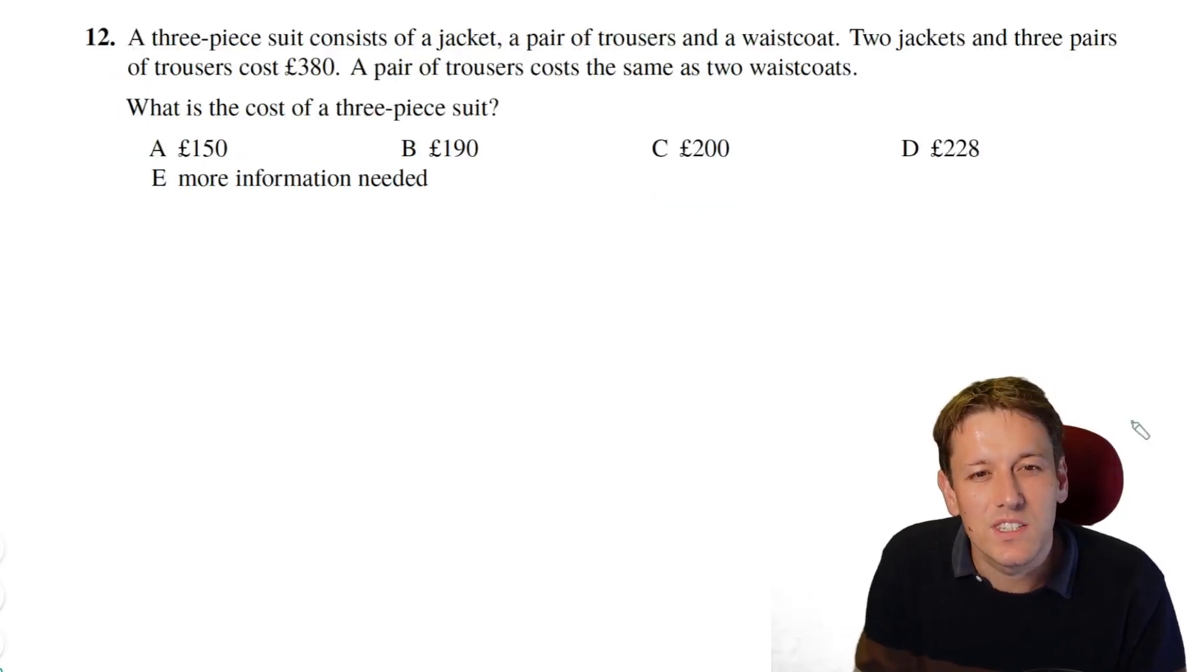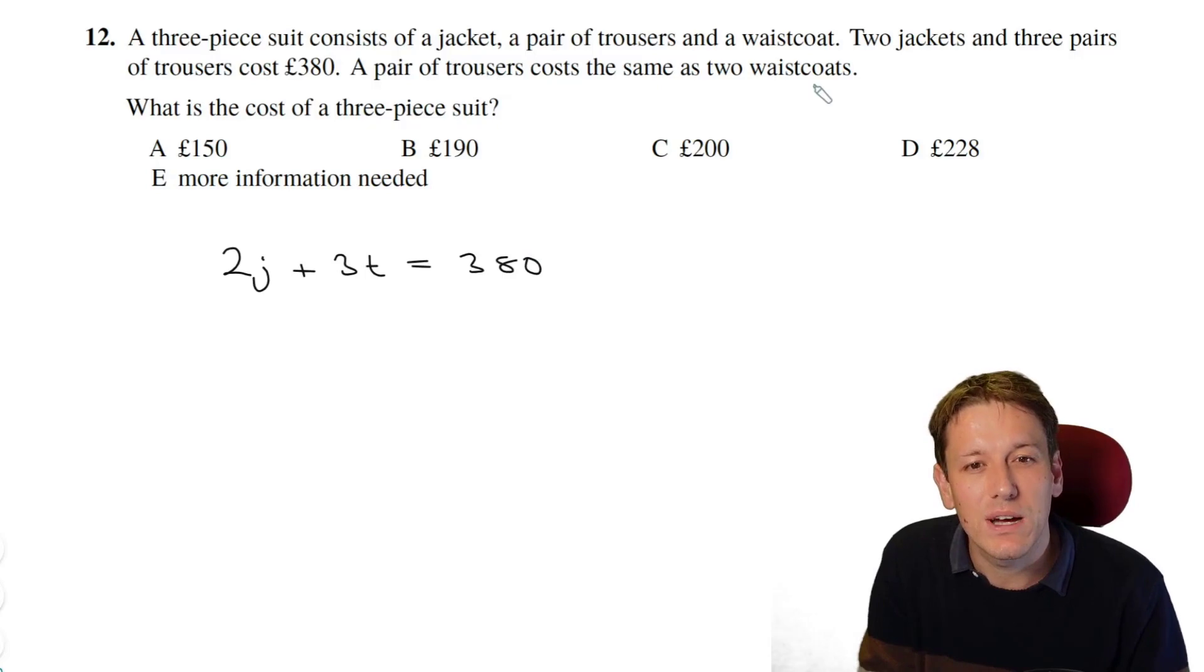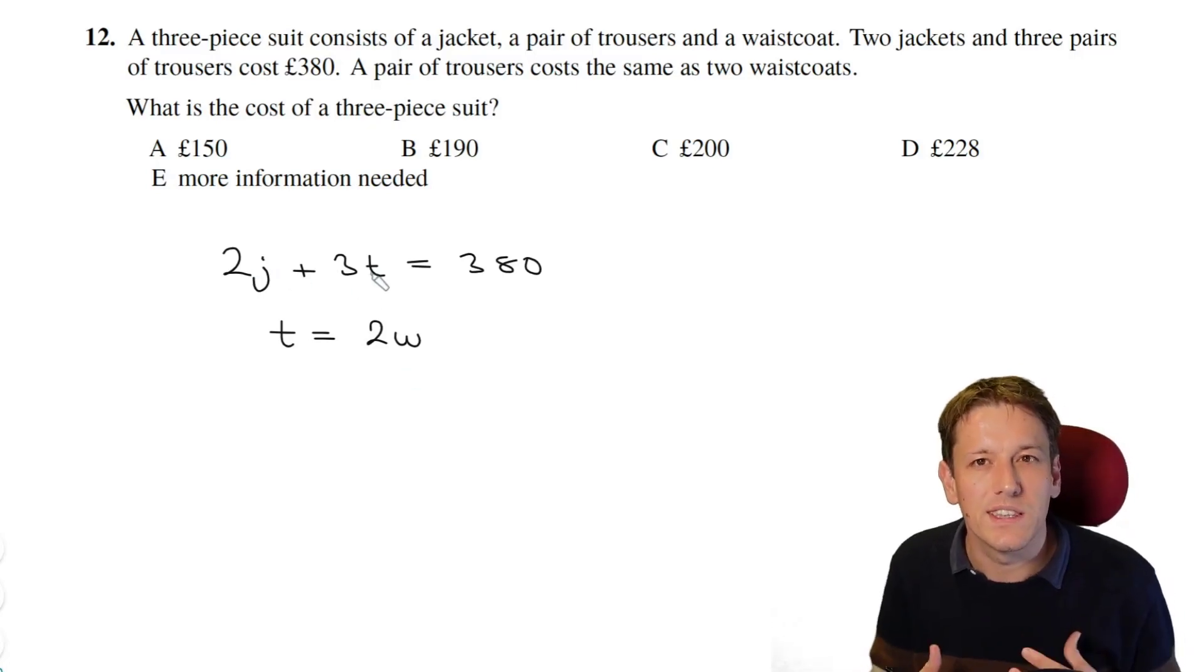A three-piece suit consists of a jacket, a pair of trousers, and a waistcoat. We've got two jackets and three pairs of trousers cost £380, so let's write that as 2j plus 3t is equal to 380. We've also got that a pair of trousers costs the same as two waistcoats, so we know that t is equal to 2 times w. And it says, what's the cost of a three-piece suit?